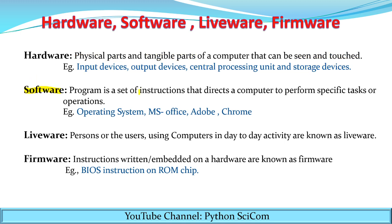Now what is software? It is a set of instructions — a program that directs the computer to perform specific tasks or operations. These instructions are written to direct the computer for the functioning of some specific task. We can run a program on the computer but we cannot see the coding. So we can just run those instructions and it is called software.